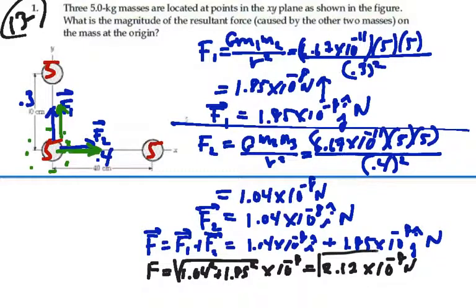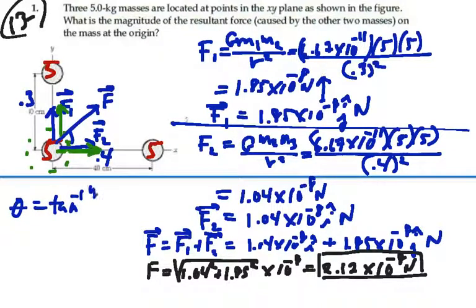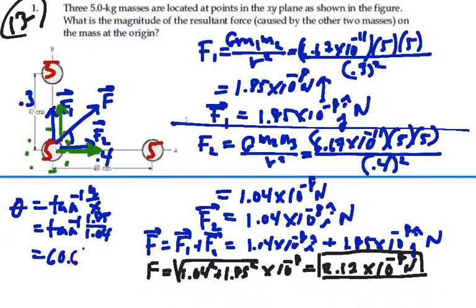Its direction will be given by this angle, which we can calculate. That angle would be the inverse tangent of the y-component over the x-component — the inverse tangent of 1.85 over 1.04 — which is 60.6 degrees. So that force is going at an angle of 60.6 degrees from the positive x-axis. And that's our magnitude and direction for the net force on the mass at the origin.